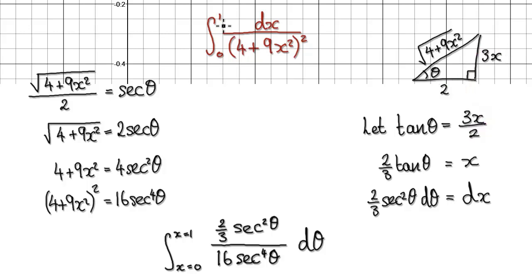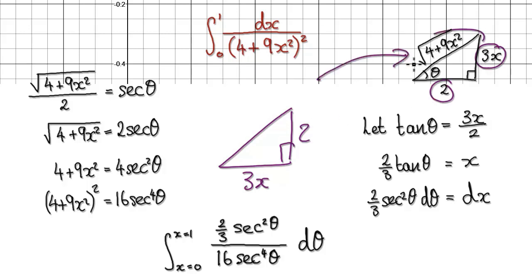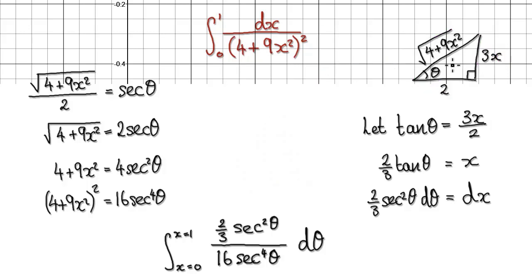By the way, when you start out by creating your triangle, you can never remember whether you should make this to be 3x and this a 2, or make this to be 3x and this a 2 — I will explain why it's better to use this later on. So we've created a triangle, and tan θ = 3x/2.